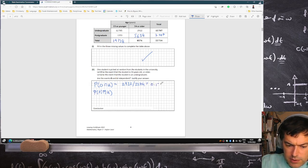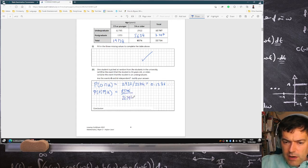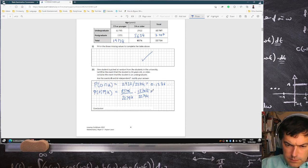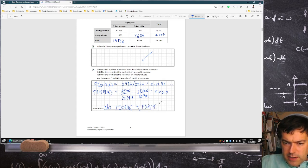U is an undergrad, so 24 or older and an undergrad, that's 2,922 over the total 22,714, which is 0.1286 etc. And then this one here, how many older students are there? 8,576 out of the total 22,714. And then undergrads, I have to be careful, 24 or older and undergrads is 15,707 over 22,714, which is 0.2610. So no, they're not independent because the probability of being older and an undergrad does not equal the probability of being older times the probability of being an undergrad.